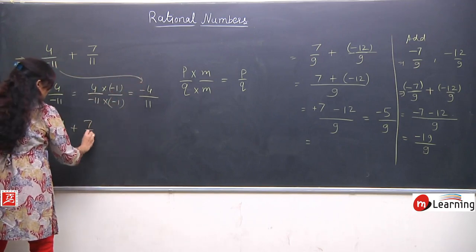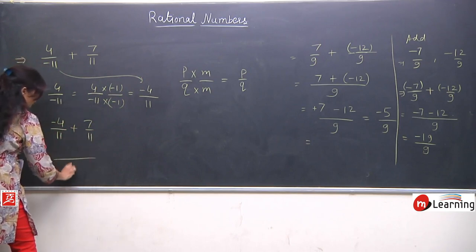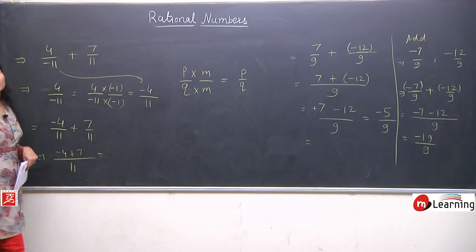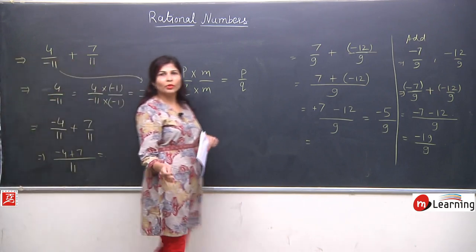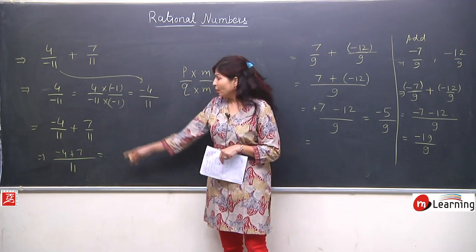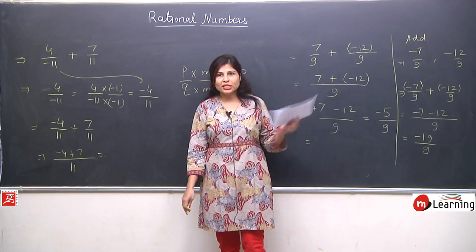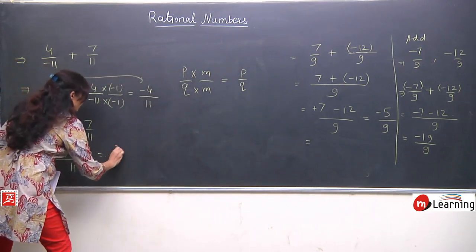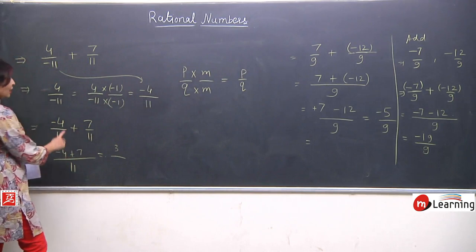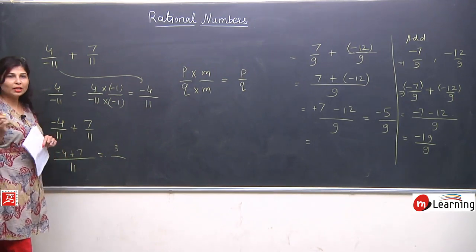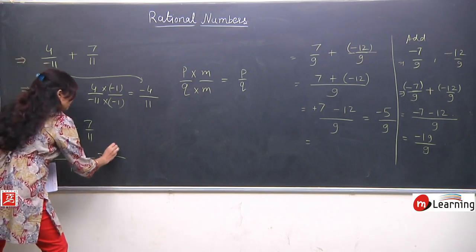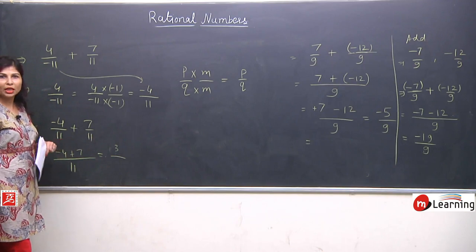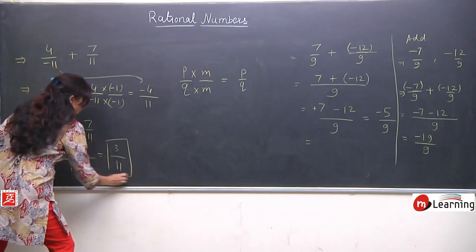So our question is now: minus 4 by 11 plus 7 by 11. Now it is easy to solve because the denominators are the same, so LCM is 11, and we add the numerators: minus 4 plus 7. Minus plus is minus, so we subtract — 7 minus 4 is 3. The sign is determined by the greater number, which is 7, and it is positive. So the answer is 3 upon 11.